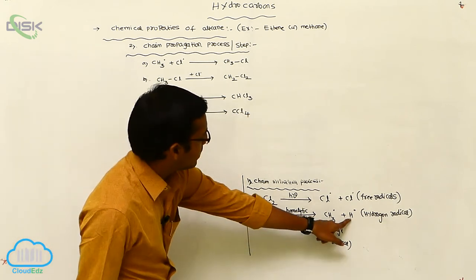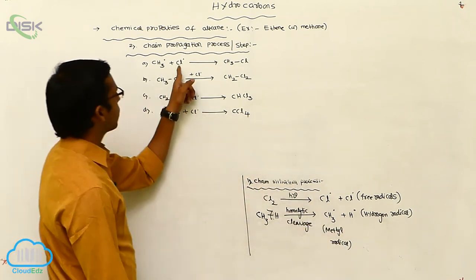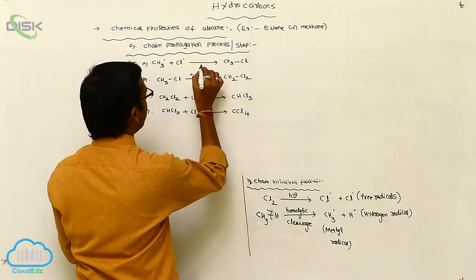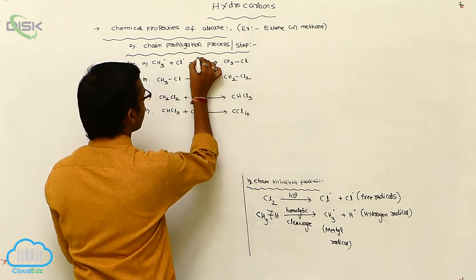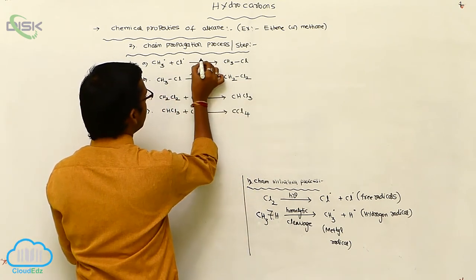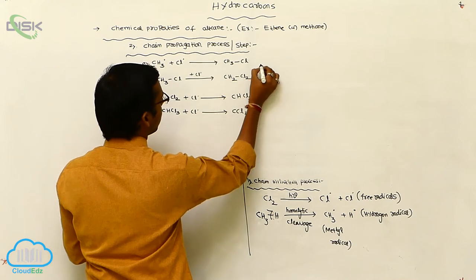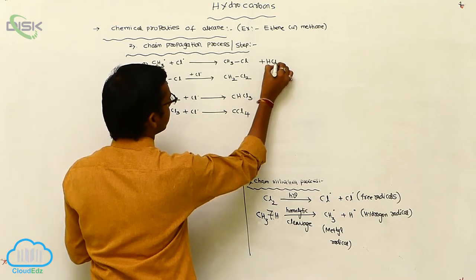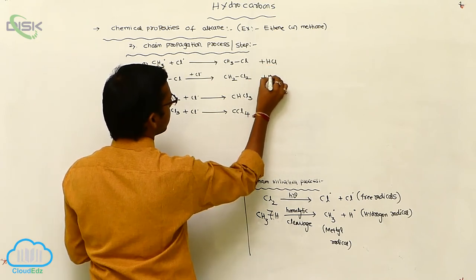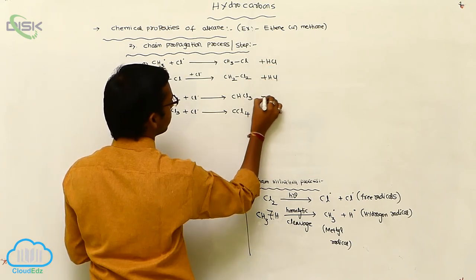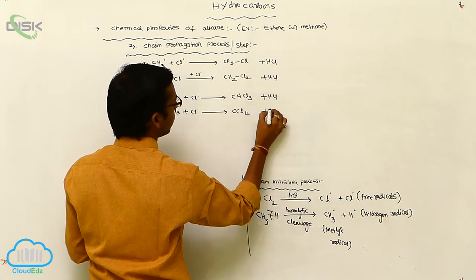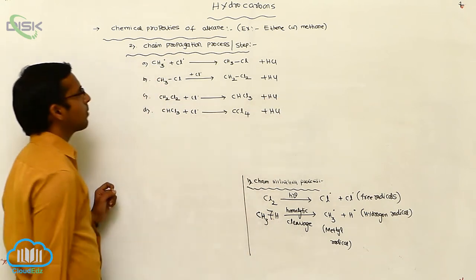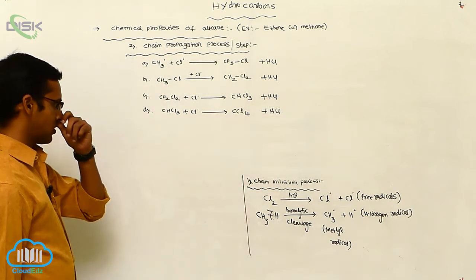In each step, your hydrogen radical is reacted with chlorine and is finally eliminated. So H+ with another chlorine radical finally gives HCl. So HCl is eliminated. This is your propagation process.